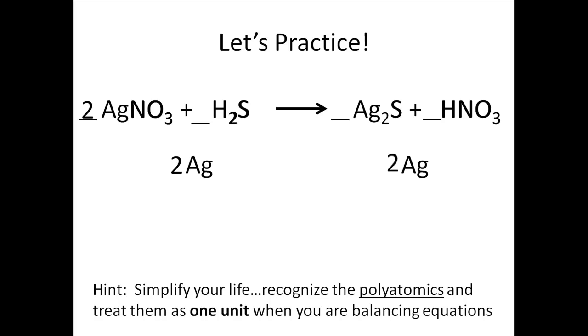Next, let's take a look at the number of nitrates, or NO3. On the right, we have 2. Remember, we put the 2 there as the coefficient. On the left, we only have 1. Let's put a 2 in as the coefficient in front of the HNO3 on the right. Now we have 2 nitrates on each side.